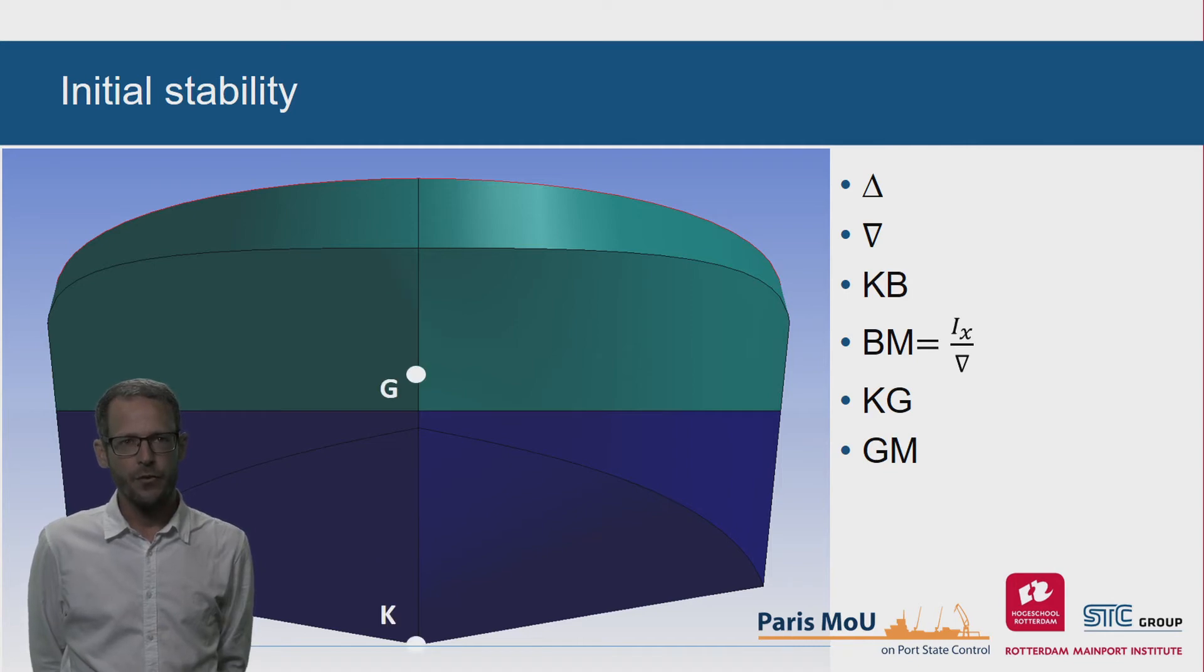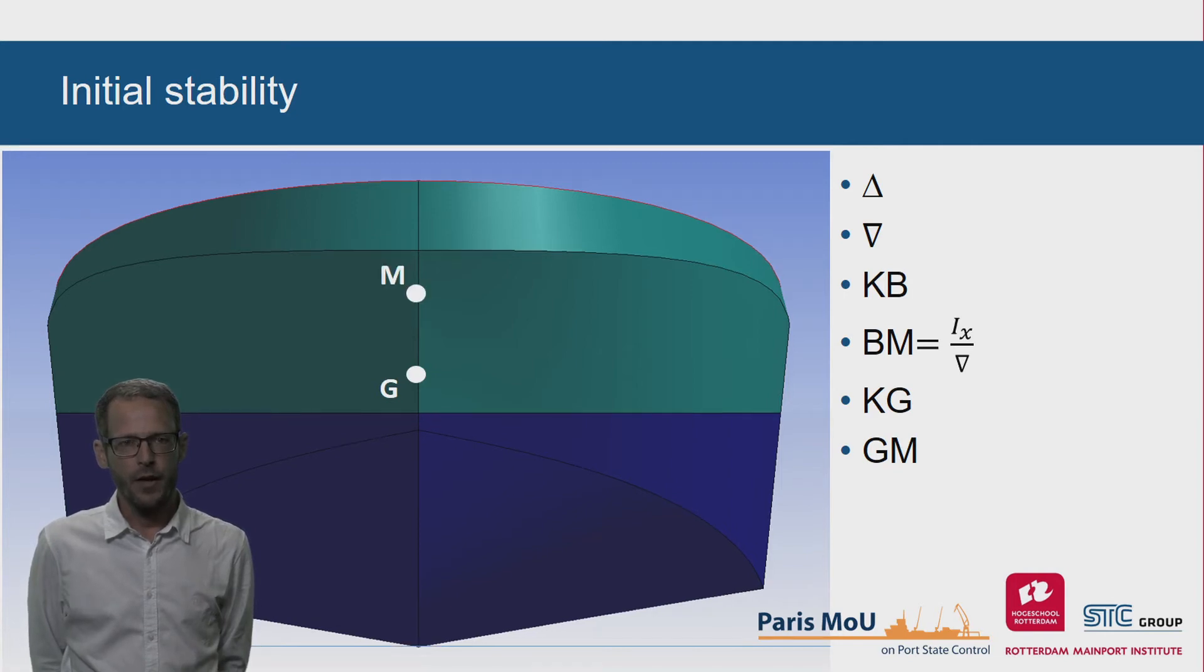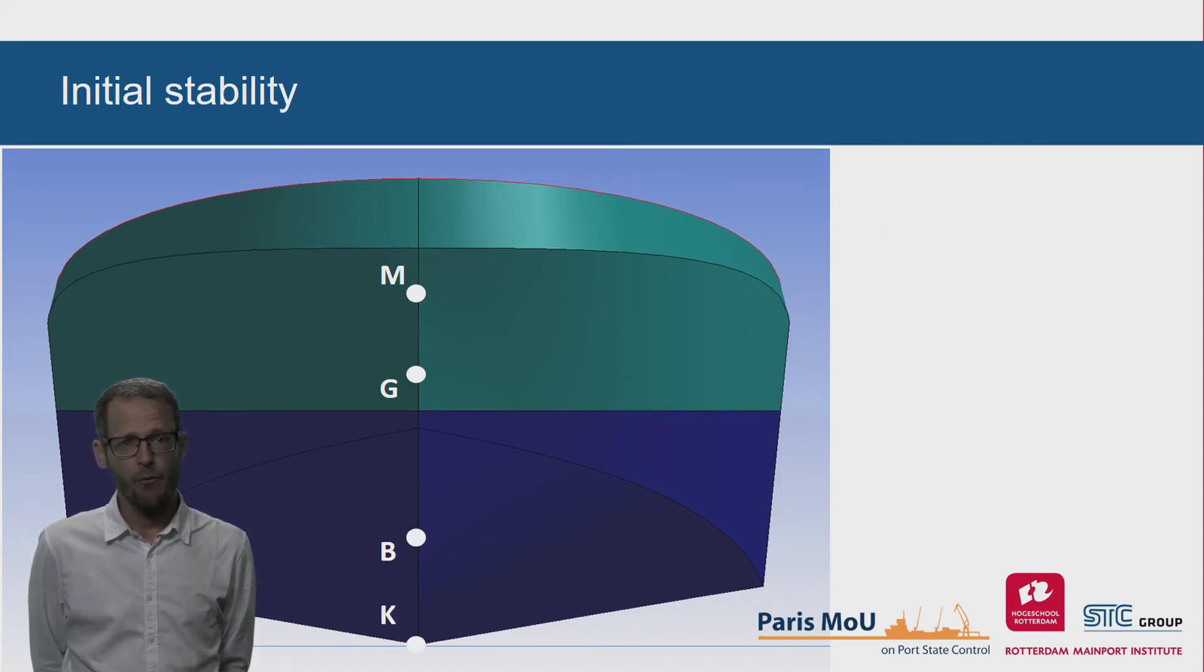The distance KG, the vertical position of the center of gravity of the ship, results from the weight calculation. And finally, the distance GM, which is the measure for intact stability. As the four points K, B, G and M are situated on the center line, we can calculate the distance between any two of them if the three other points are known.